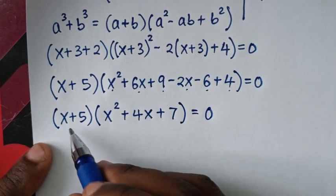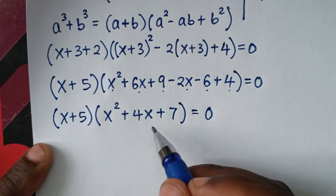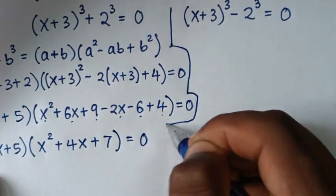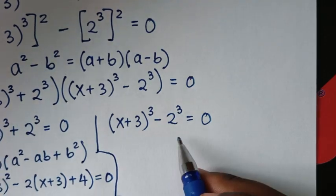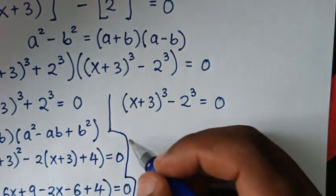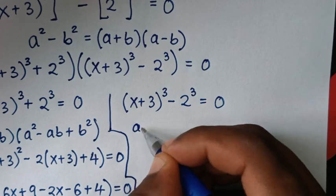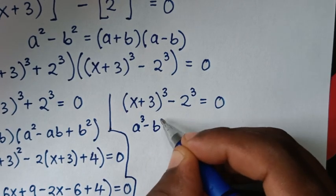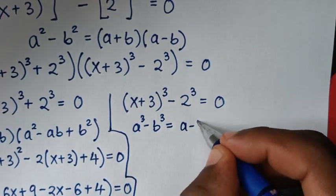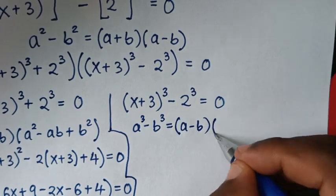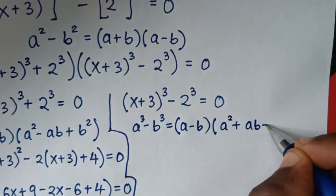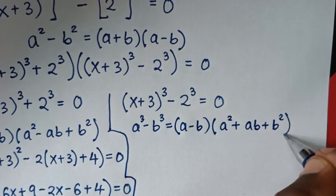Now from the second solution — difference of two cubes — it is in the form of a³ minus b³, which equals (a − b)(a² + ab + b²).